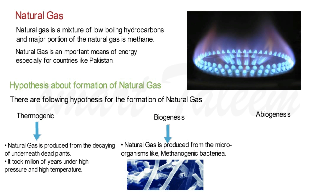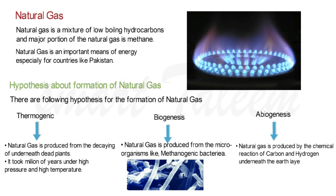The third theory about the formation of natural gas is abiogenesis — this theory states that natural gas is produced by the chemical reaction of carbon and hydrogen underneath the earth's layers. There is a large amount of carbon and hydrogen present in the deeper layers of the earth, along with very high temperature, so carbon and hydrogen react together to produce methane gas. The third best source of organic compounds is petroleum, which will be explained in the next lecture.